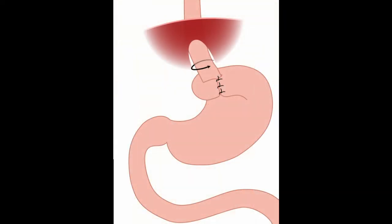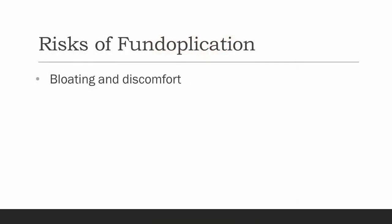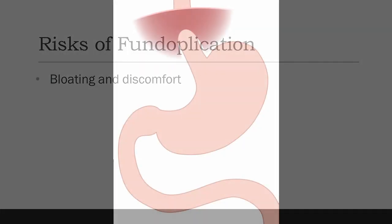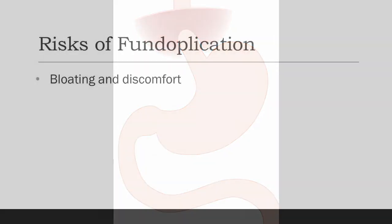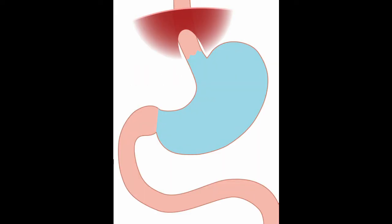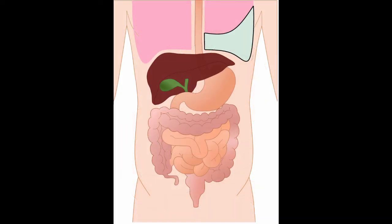Some people experience difficulty swallowing or belching if their wrap is too tight. This can cause bloating and discomfort from gas. Sometimes, your esophagus can slip out of the wrapped portion of your stomach so that your esophageal sphincter is no longer supported. This can cause a recurrence of acid reflux. Occasionally, the lining of the lung will be damaged while freeing up the lower esophagus. This can result in a small amount of air leaking into the space around your lung. This will usually resorb and heal on its own without treatment, but if a large amount of air is present, it could need decompression with a needle or a small chest tube.